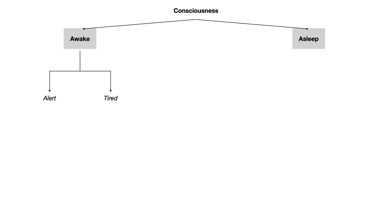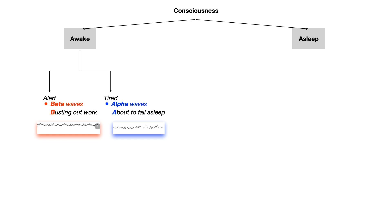If you're awake alert, you're going to have beta waves on an EEG. And if you're awake tired, you're going to have alpha waves on the EEG. The reason I'm stressing what type of waves you'll see on an EEG is because this shows up all the time on USMLE and COMLEX. The test writers love to quiz you about what type of waves you will see. There's beta waves when you're busting out work and alpha waves when you're about to fall asleep.